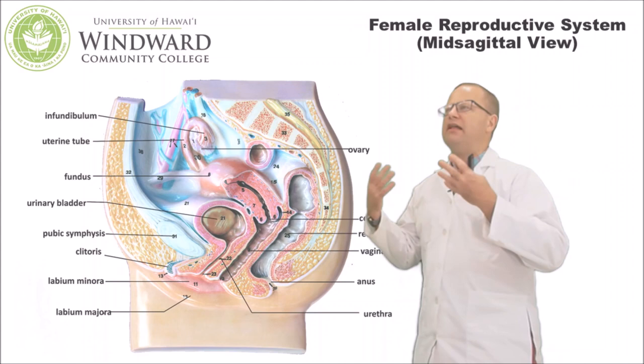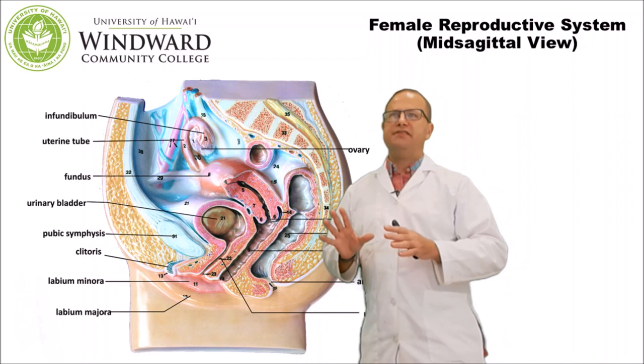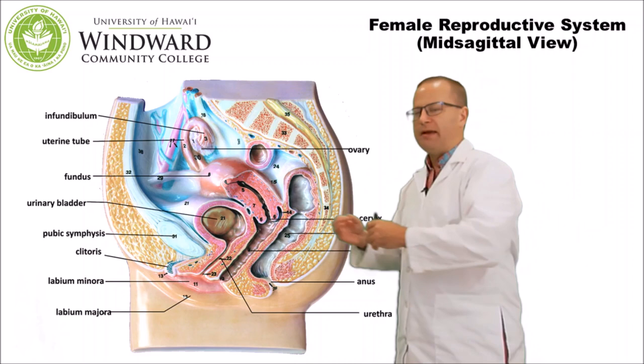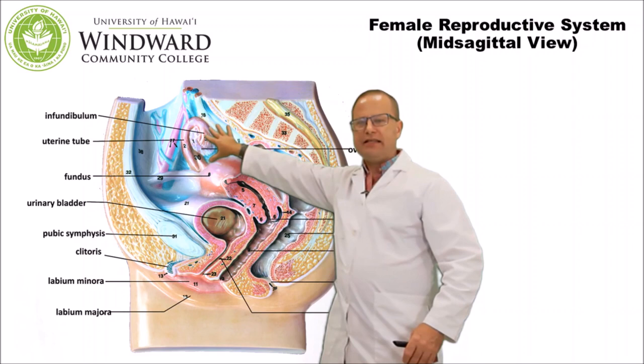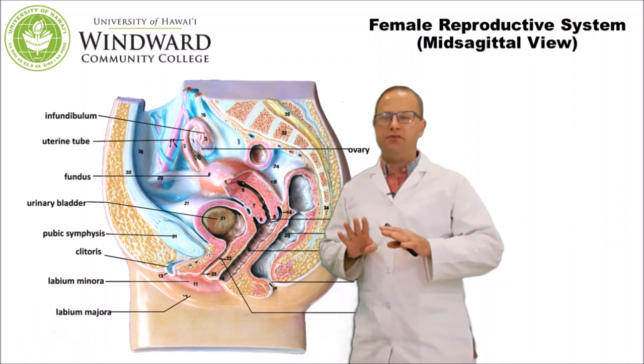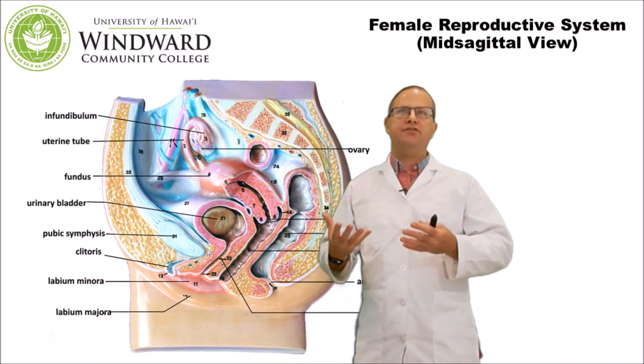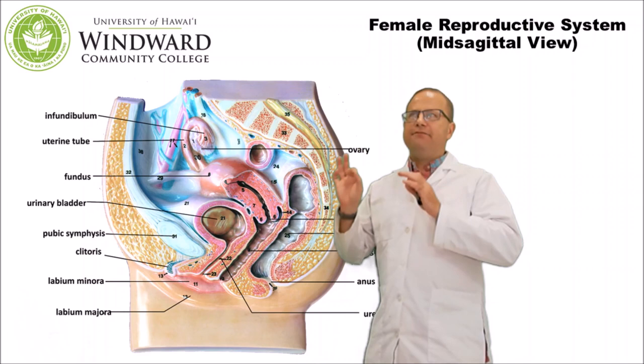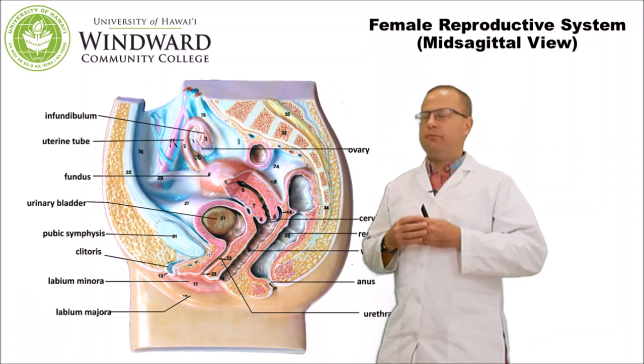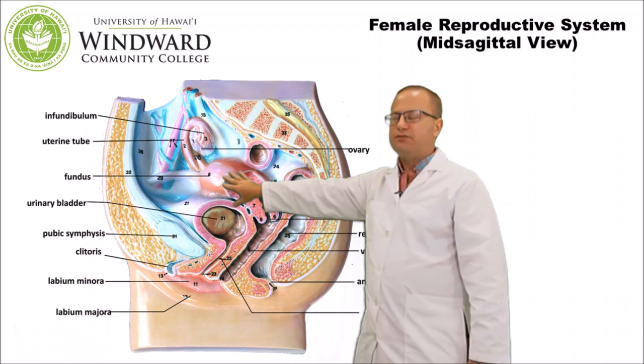Now let's look at the female reproductive system, which tends to be more complex than the male because it has more jobs to do. Like the male, it has to produce gametes — made up here in the ovary, which is nicely inside the body. The ovary produces oocytes, and interestingly a female is born with all the oocytes she'll ever have — unlike males, they're not making new oocytes every day. The second function is to produce hormones: estrogen and progesterone, also made in the ovary, which affect the uterus and other areas.